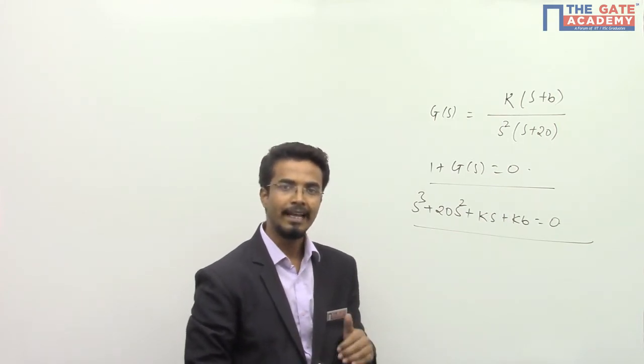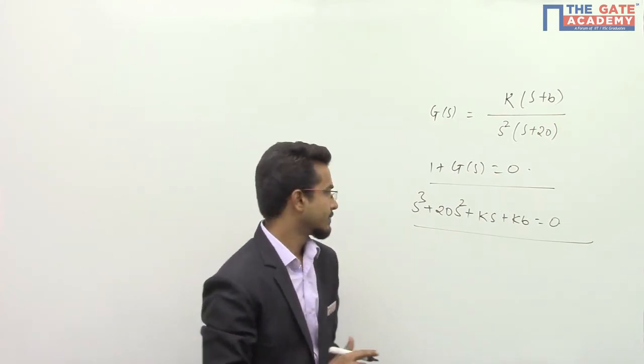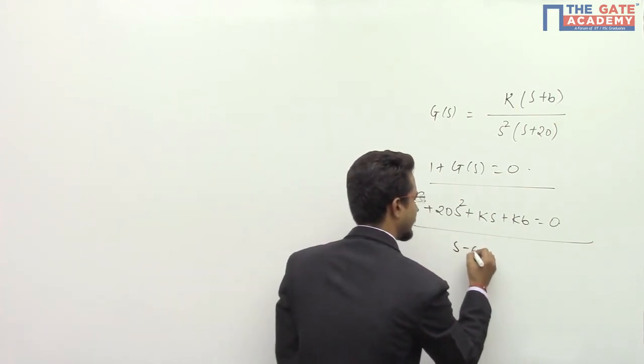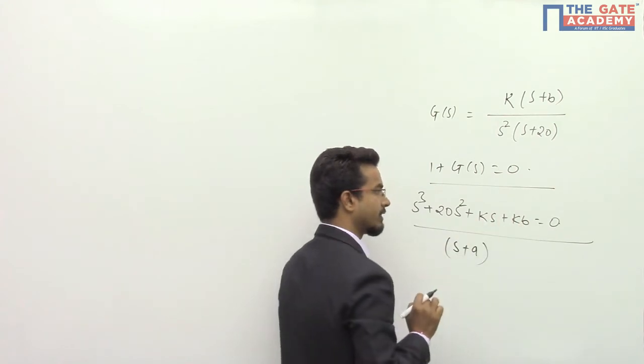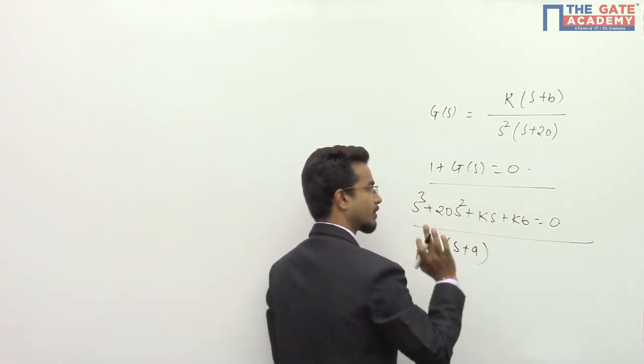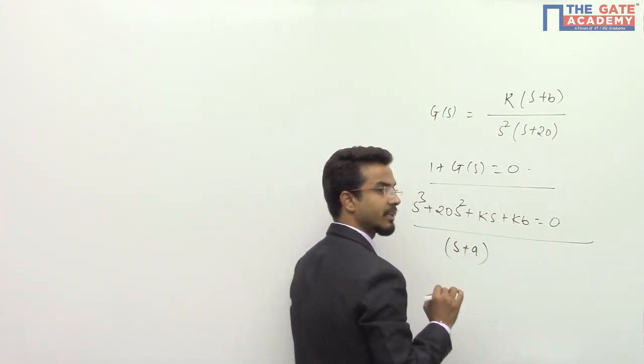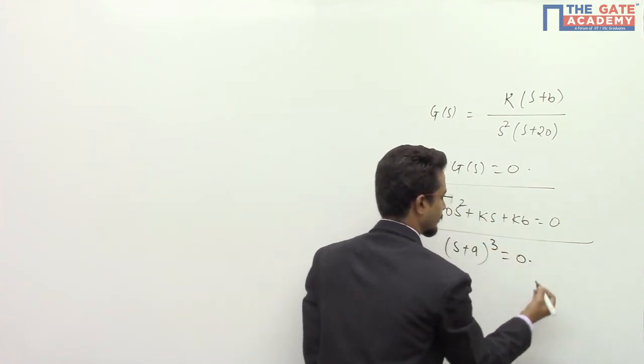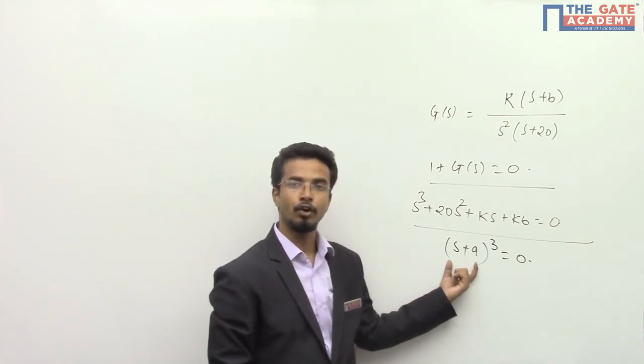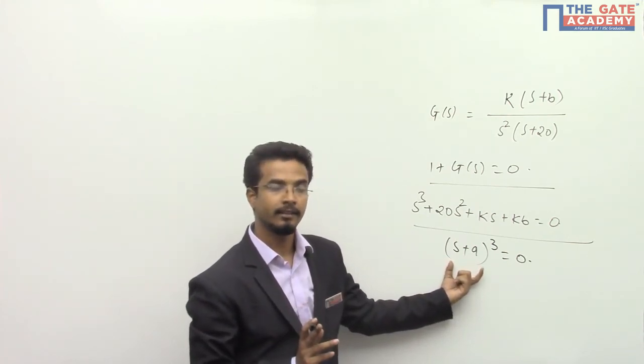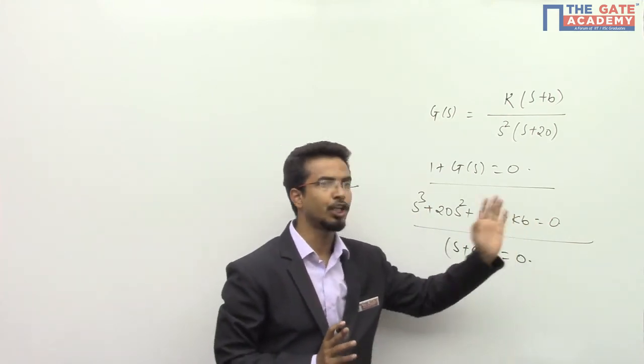The value of the root is a, so I will take s plus a, because all the roots are having positive coefficient. All the coefficients are positive here, and that is why I am saying s plus a to the whole cube equals 0. Because this particular equation is having all the roots at minus a and this particular equation is having some polynomial.